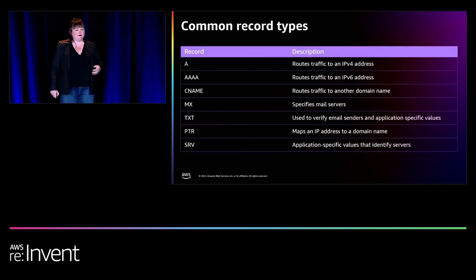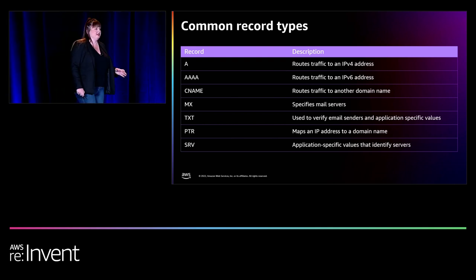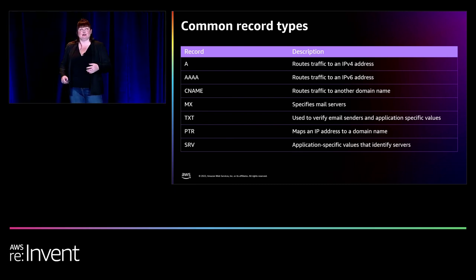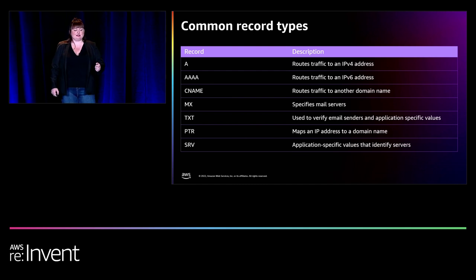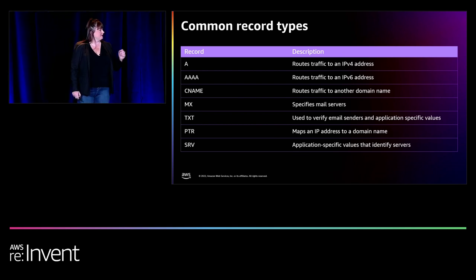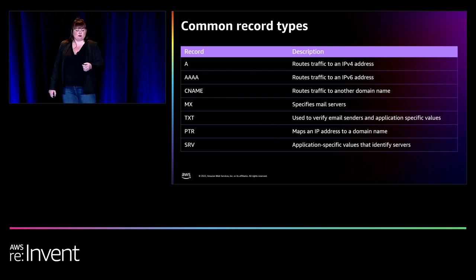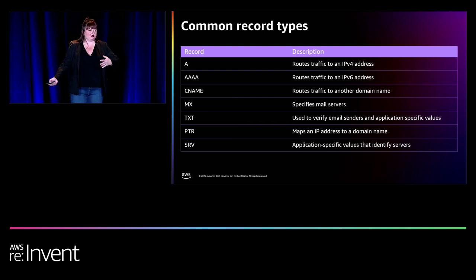So as we saw before, web1.unicornpacket.com was eventually identified as a record in a zone. There are many types of common DNS record types — in AWS terms we call these resource record sets. We have the A record, which routes traffic to an IPv4 address — A stands for address. If the web server had an IPv6 address you'd use the quad-A record. And then there's the CNAME record — it routes traffic to another domain. You can create a CNAME record called web1.unicornpacket.com and route it to a completely different domain name.